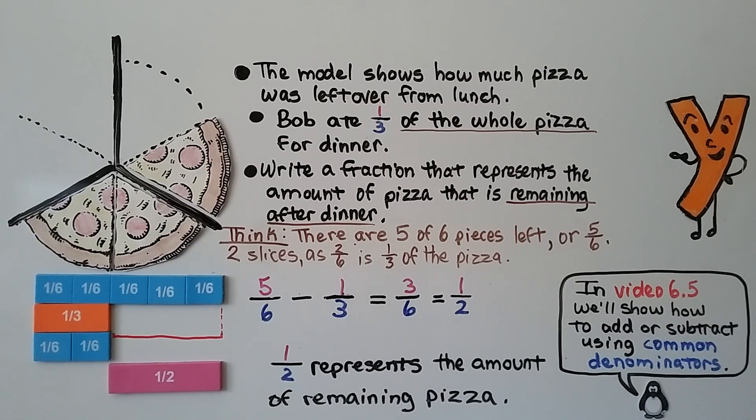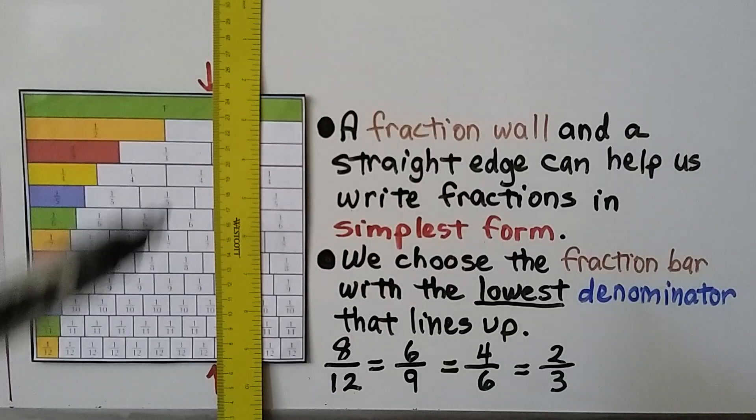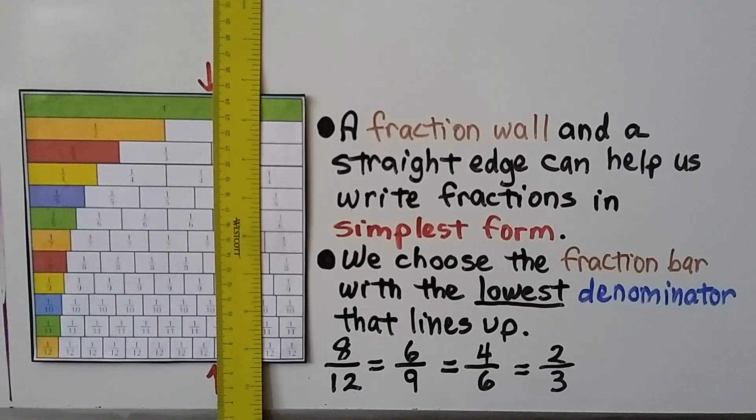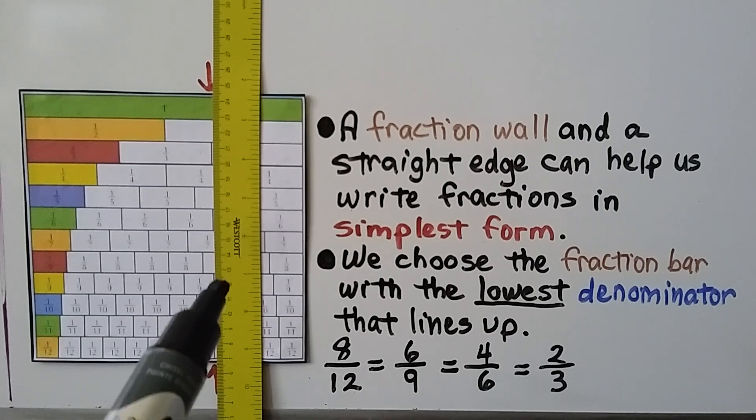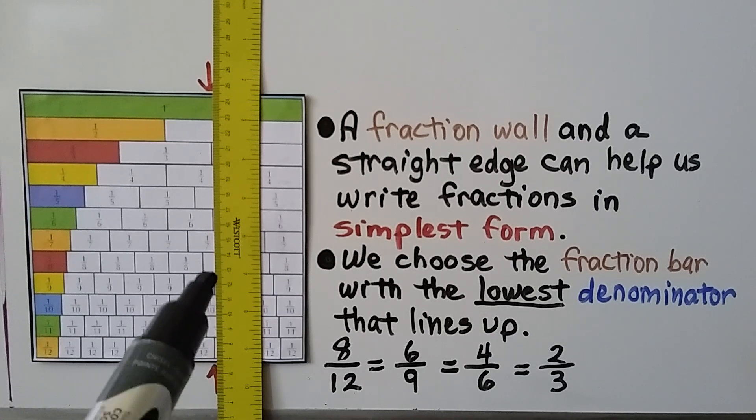Now in video 6.5, coming up soon, we'll show how to add or subtract using common denominators. This is called a fraction wall. A fraction wall and a straight edge can help us write fractions in simplest form. We choose the fraction bar with the lowest denominator that lines up. Here we have eight-twelfths right here on this line. We can see that six-ninths is the same. It lines up.